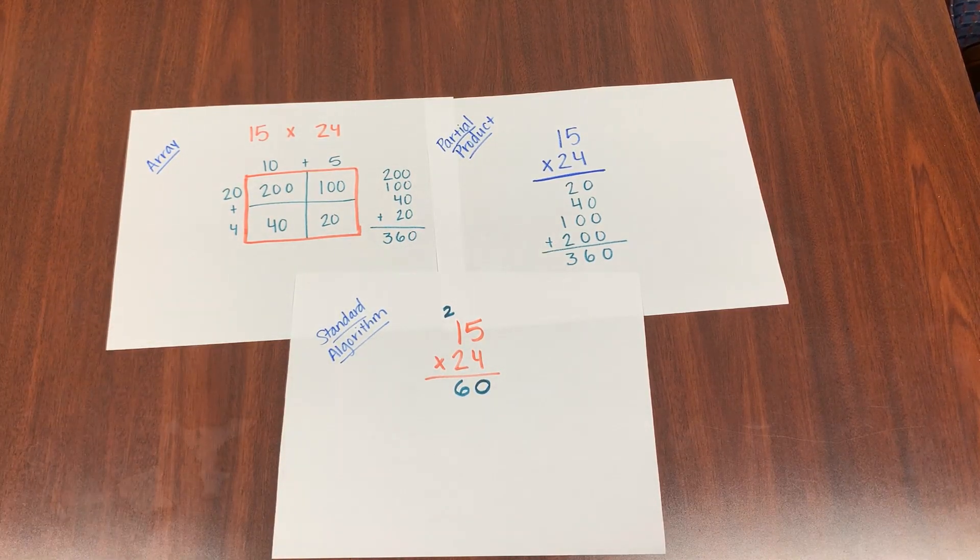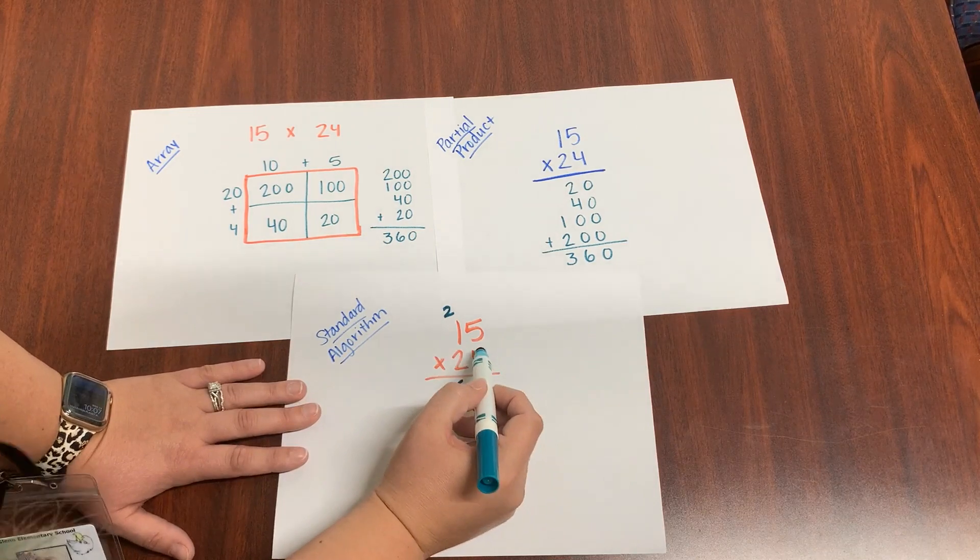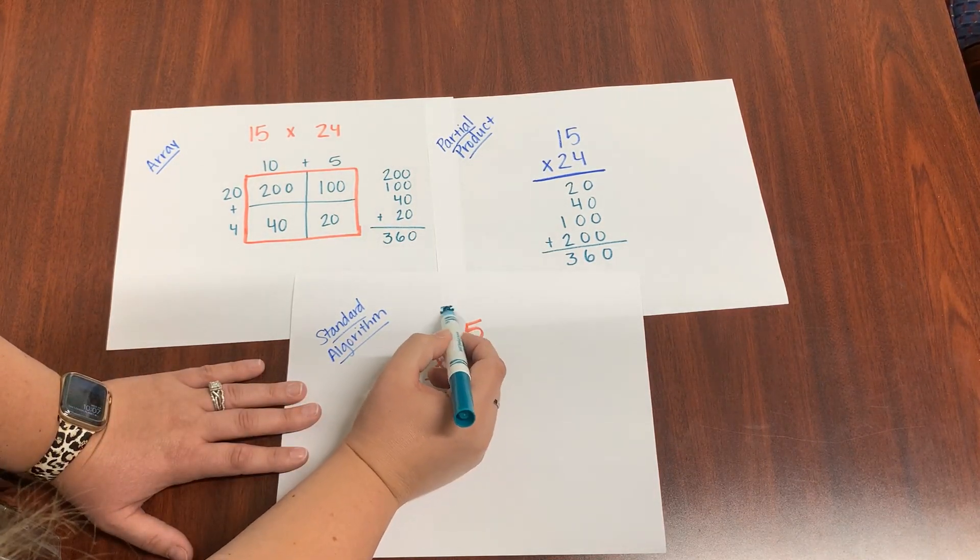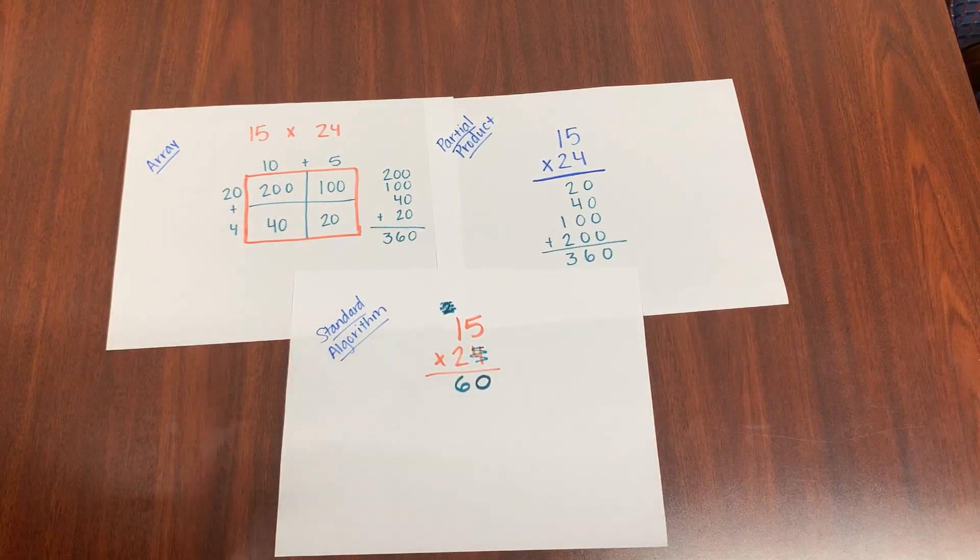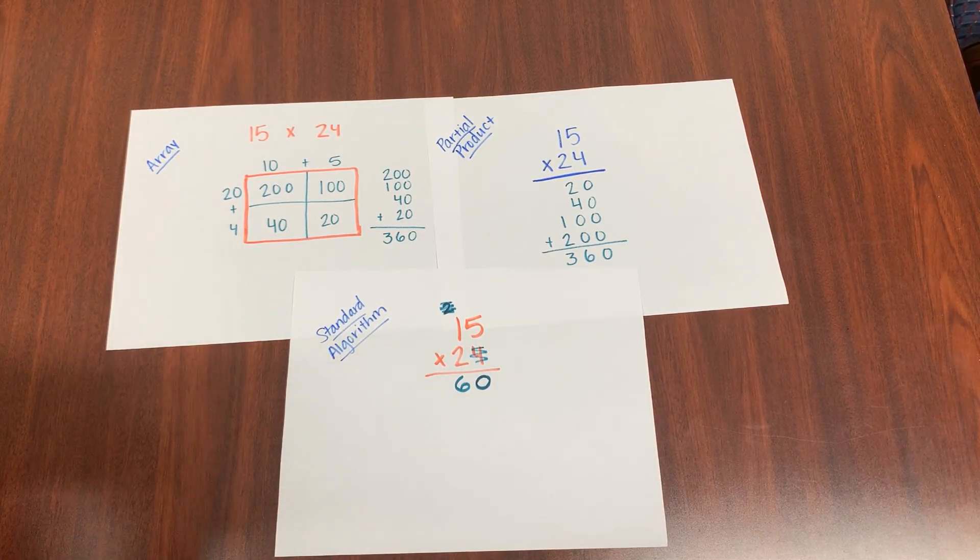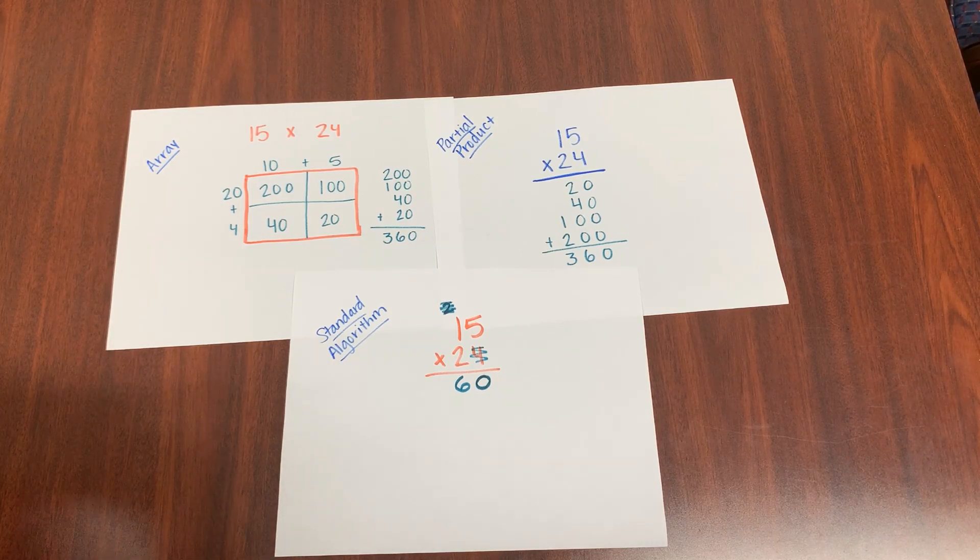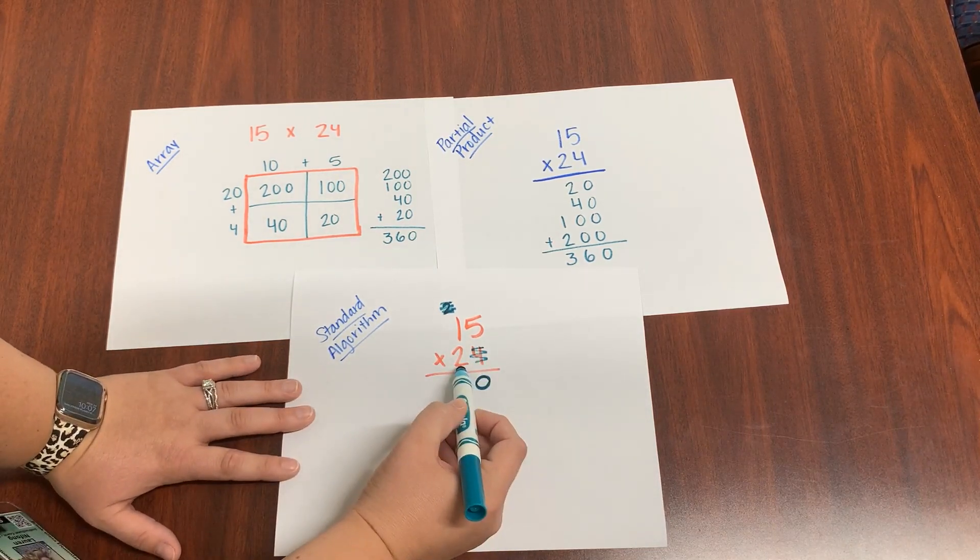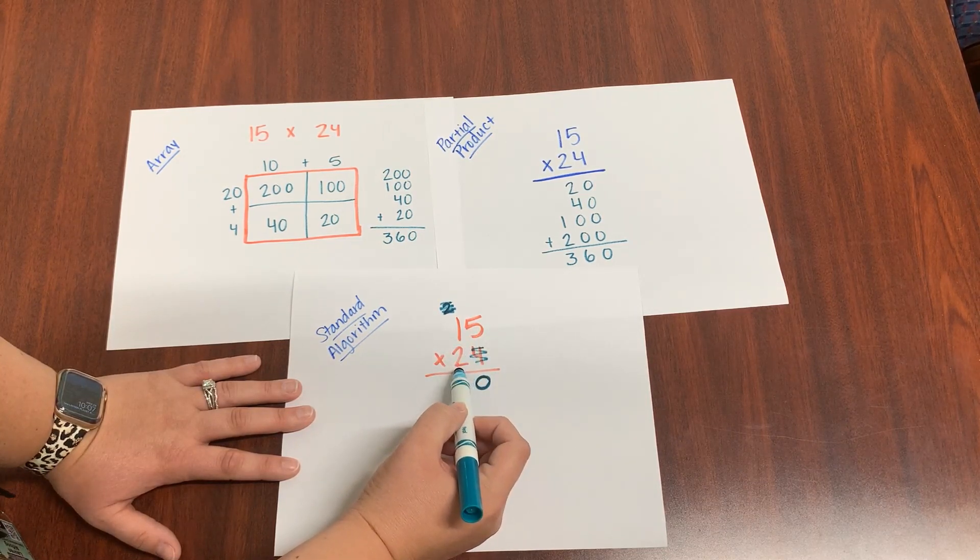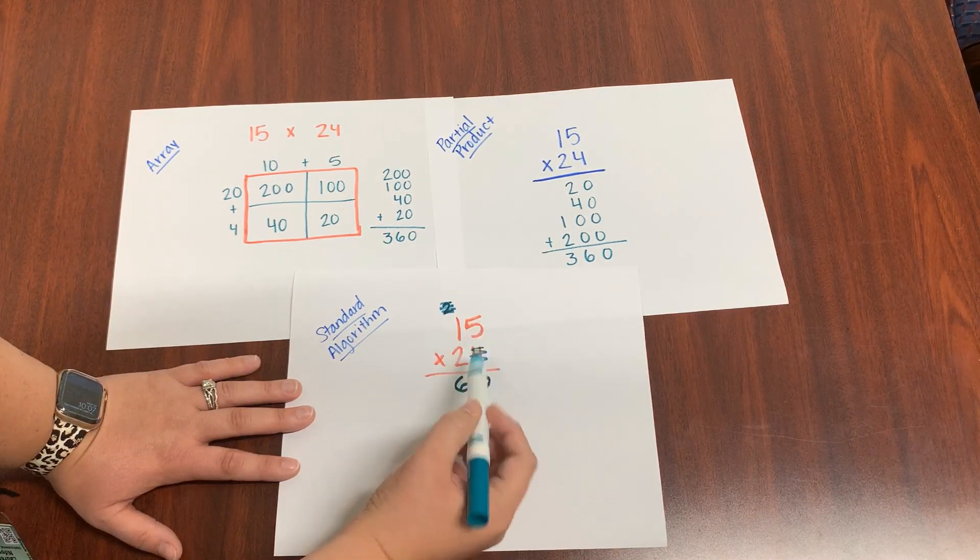A little trick that I like to use. I'm finished with this four. I'm going to cross them out. I'm finished with this two. I'm going to cross them out. It helps me not get confused when I go to the next step, not to reuse numbers that I've already used. Now we're going to take the two in the tens place and multiply it by this 15 on top. The two in the tens place multiplied by the 15 on top.